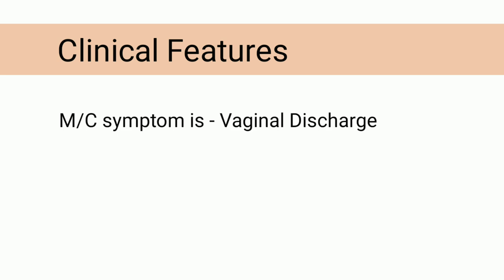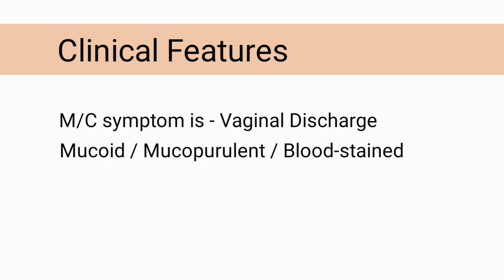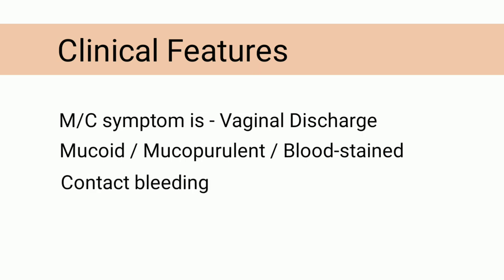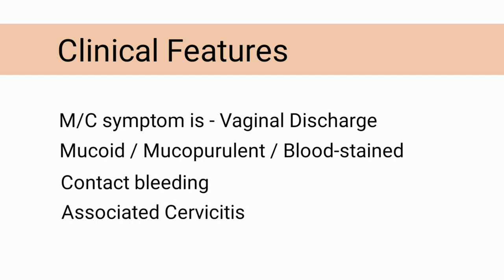Now let us look at the clinical features of cervical erosion. The most common symptom is vaginal discharge, which can be mucoid, mucopurulent, or blood-stained. Contact bleeding can occur following coitus or defecation, if the patient is pregnant or using pills. If there is associated cervicitis, then pelvic pain, backache, or infertility can occur.